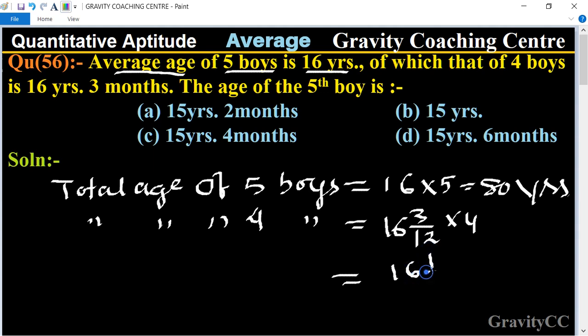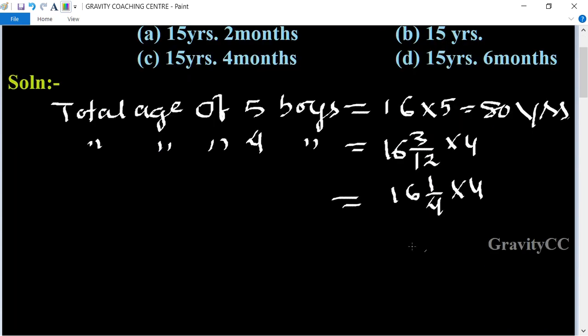This equals 65/4 into 4. So 4 and 4 cancel, giving us 65 years.